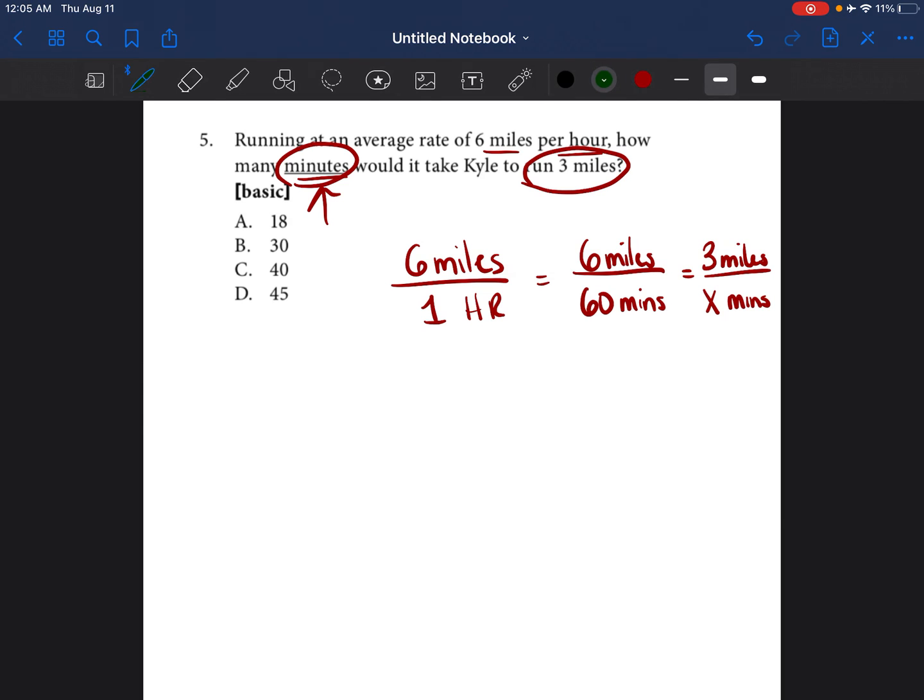So now we're just going to cross multiply. So we're going to do 60 times 3 is equal to 6 times X. 60 times 3 is 180 is equal to 6X.